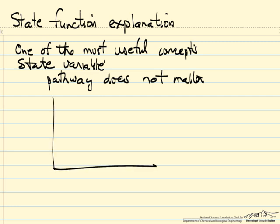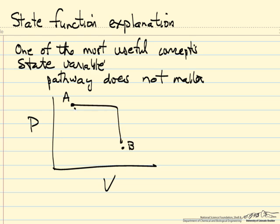So for example, on some pressure or volume diagram, we go from A to B. There's one pathway, there's a second, there's a third.